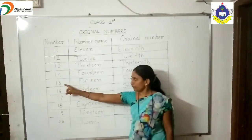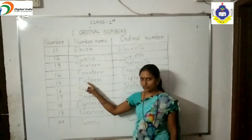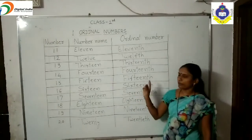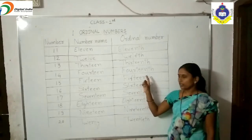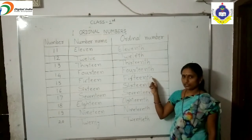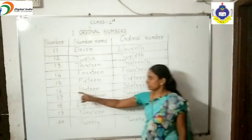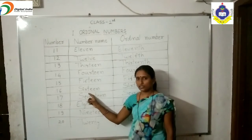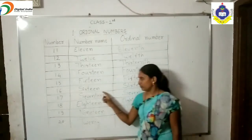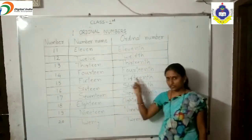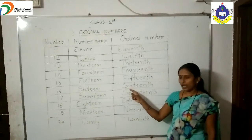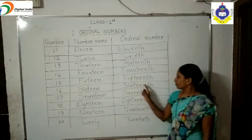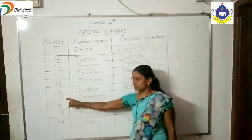Now 15: the number name is F-I-F-T-E-E-N, and its ordinal number is fifteenth, spelled F-I-F-T-E-E-N-T-H. Write down, students. Next, 16: the number name of 16 is S-I-X-T-E-E-N, and its ordinal number is sixteenth, spelled S-I-X-T-E-E-N-T-H. Write T-H in front of 16.